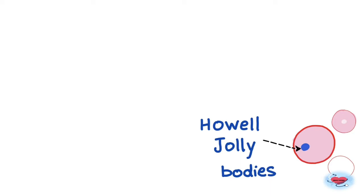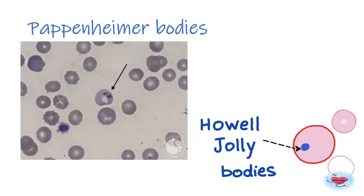On peripheral blood smear, accessory spleens won't show Howell-Jolly bodies or Pappenheimer siderotic bodies — these bodies are normally seen after splenectomy. Howell-Jolly bodies are DNA fragments retained inside erythrocytes when the spleen is absent. Similarly, Pappenheimer bodies are iron-containing debris retained in mature erythrocytes in post-splenectomy or autosplenectomy cases.